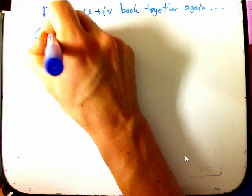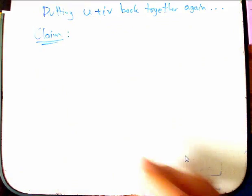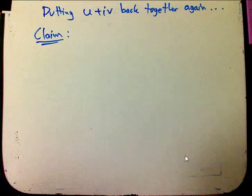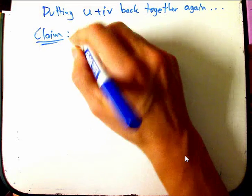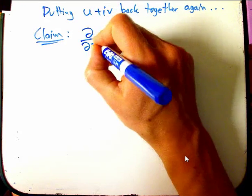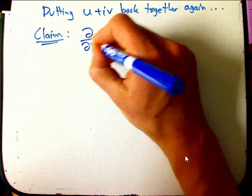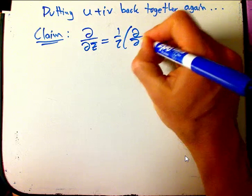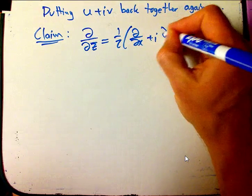I want to claim, and this justifies something I said with an annotation. I had to correct this with an annotation because I made a silly mistake in a previous video. It's really useful to define d by dz bar to be one half of d by dx plus i d by dy.